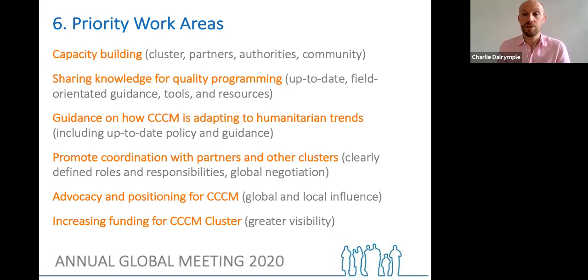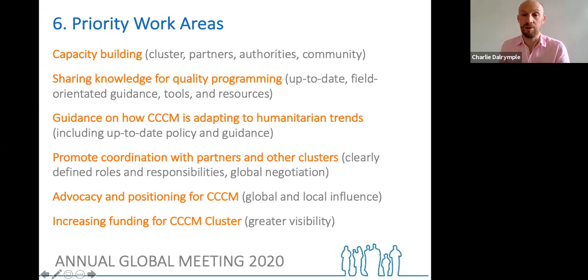Five and six are about advocacy and positioning, and then increasing funding. They're fairly similar because positioning and advocacy certainly helps fundraising, but the two were felt different enough to separate. So the six areas are: capacity building; sharing knowledge; advice and guidance for programming; providing guidance on adapting to humanitarian trends; promoting coordination; advocacy and positioning for CCCM; and increasing funding for the CCCM cluster.